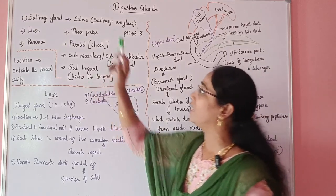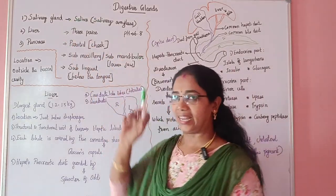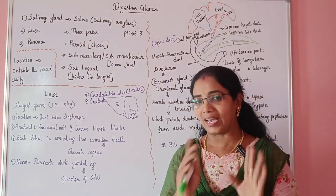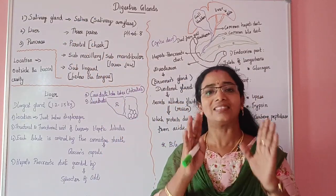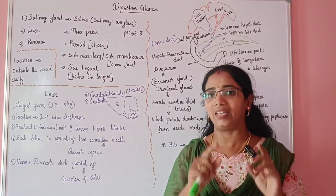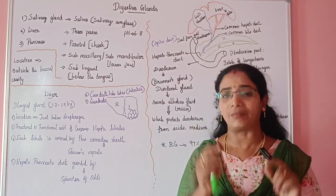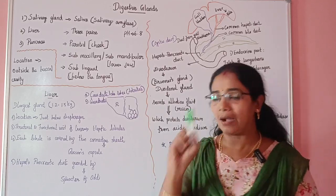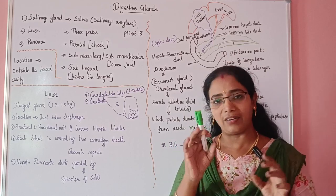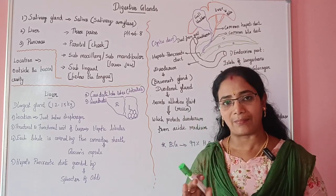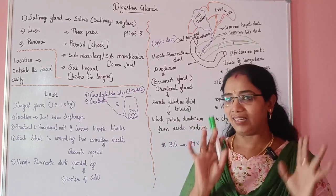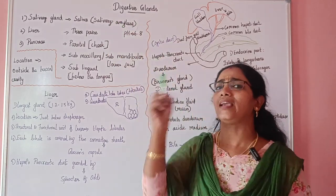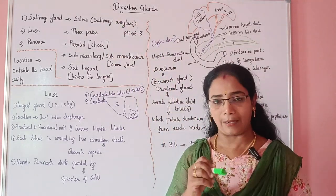The first gland is the salivary gland. The salivary gland secretes saliva. The enzyme secreted is salivary amylase.